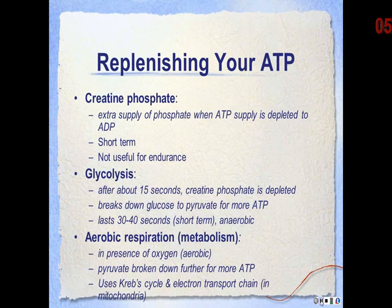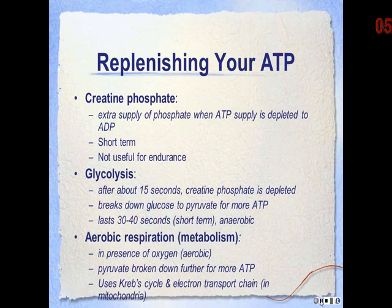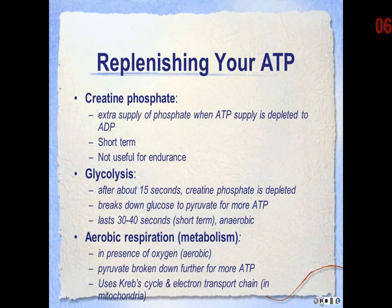Creatine phosphate provides an extra supply of phosphate when it becomes depleted from the ATP. The phosphate will be transferred from the creatine to the adenosine diphosphate to make it adenosine triphosphate. This is a short-term supply and is not useful for endurance exercises since it is generally depleted within the first minute. Another reason endurance athletes tend not to like creatine phosphate is it holds a lot of water, increasing body weight and inhibiting performance.